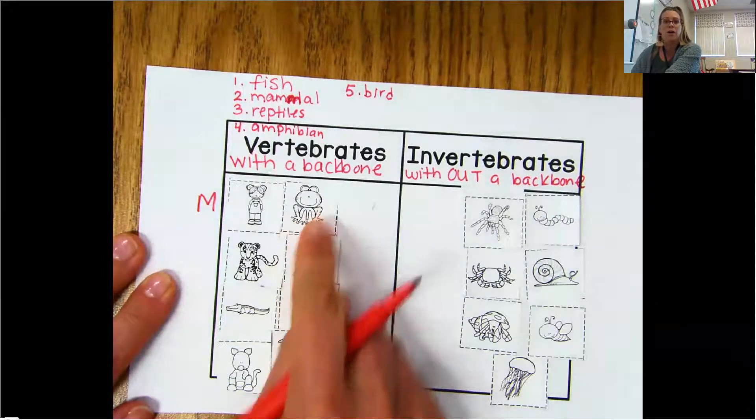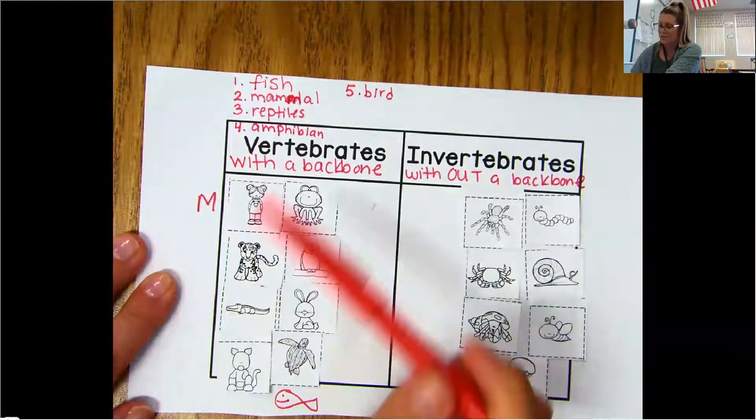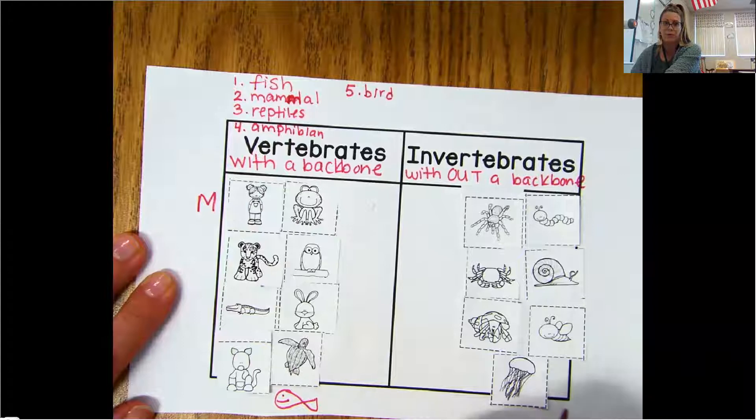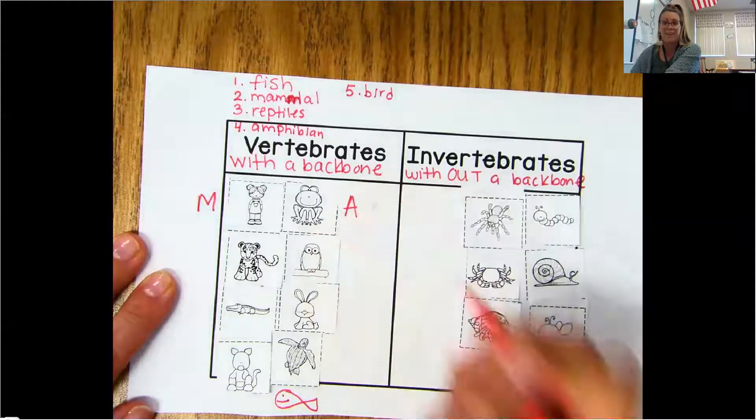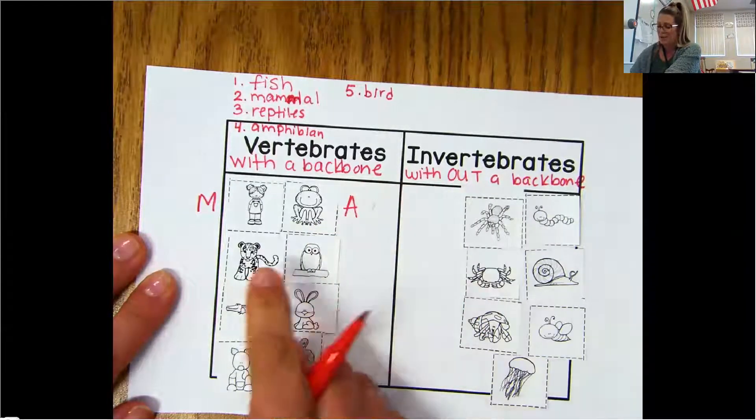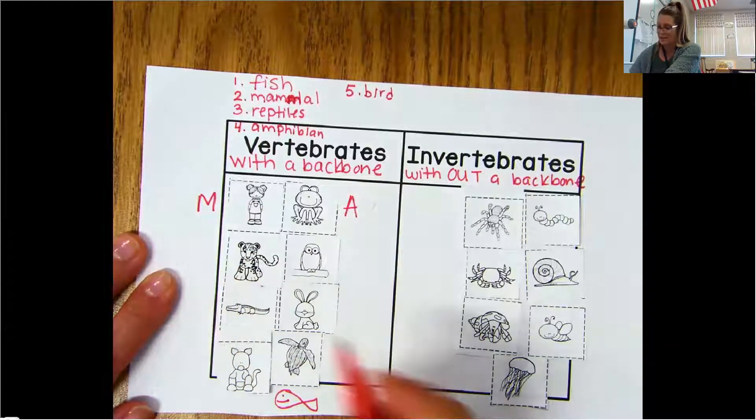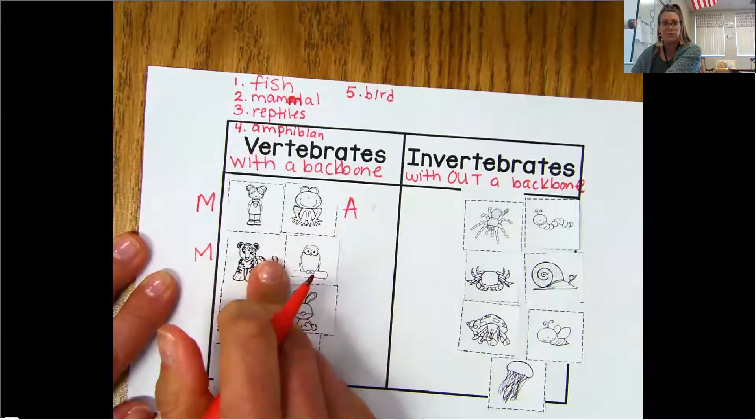All right. What about the frog? What's the frog? Write down the first letter. Fish, mammal, reptile, amphibian, or bird? You should have written A for amphibian. What about the cheetah or the jaguar? Mammal, right? Because we know it has hair. That's one way.